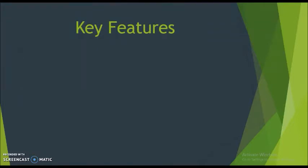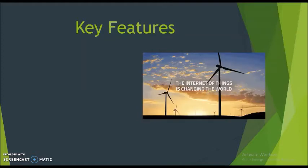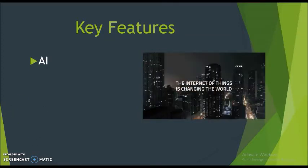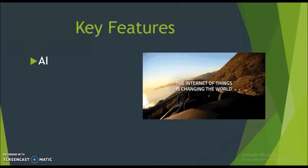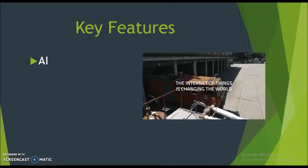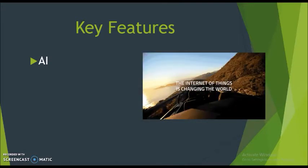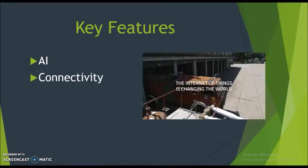Key features of IoT: IoT essentially makes virtually anything smart, meaning it enhances every aspect of life with the power of data collection, artificial intelligence algorithms, and networks. This can mean something as simple as enhancing your refrigerator and cabinet to detect when milk and your favorite cereal run low, and then placing an order with your preferred grocer.